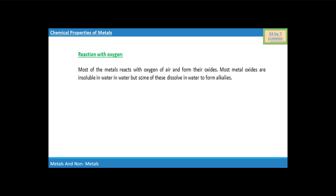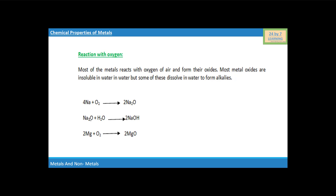Most of the metals react with oxygen of air and form their oxides. Most metal oxides so formed are insoluble in water, but some of these dissolve in water to form alkalies. You can see when sodium metal reacts with oxygen then it will form sodium oxide, and this sodium oxide when it reacts with water will form an alkali, sodium hydroxide NaOH.